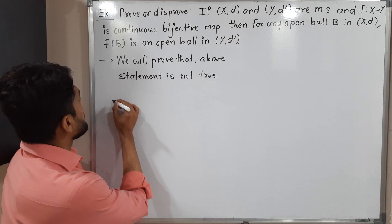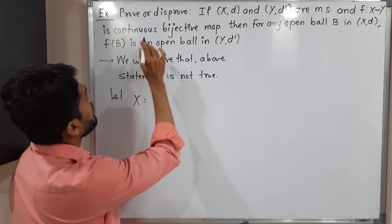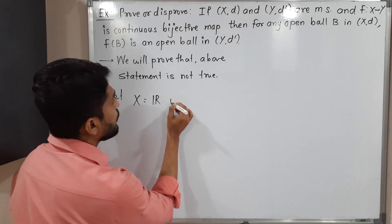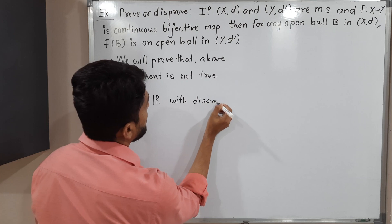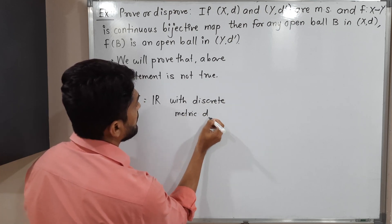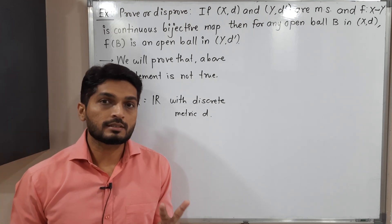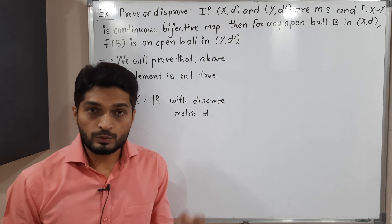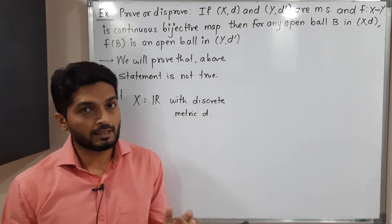So I am going to consider a metric space. Let x be the domain. My x is r, the set of real numbers, with discrete metric d. We are familiar with the discrete metric — it has only two values: d of xy is equal to 0 if points are equal, and equal to 1 if points are distinct.